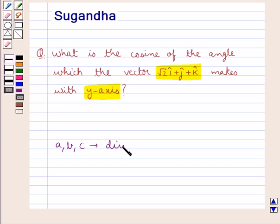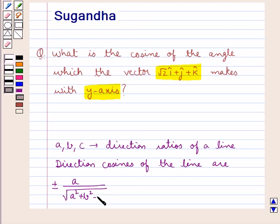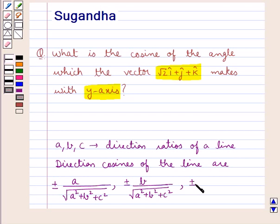If a, b and c are the direction ratios of a line, then the direction cosines of the line are given as ±a/√(a²+b²+c²), ±b/√(a²+b²+c²), and ±c/√(a²+b²+c²).